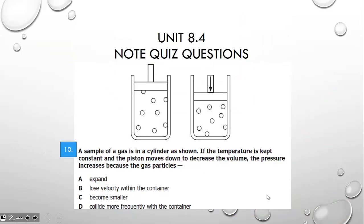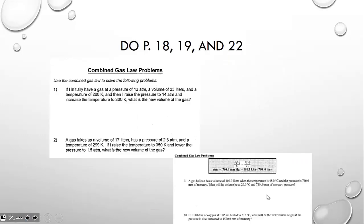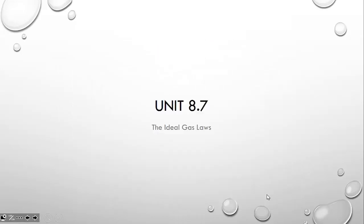Your final note quiz question has less to do with calculation and more to do with conceptually picturing what happens to pressure when we push down on a piston. Complete note quiz question number 10 and then do lots of practice on combined gas laws. Remember, if something is constant, remove it from the formula. Practice on pages 18, 19, and 22 in your packet. See you next time when we talk about the ideal gas law.